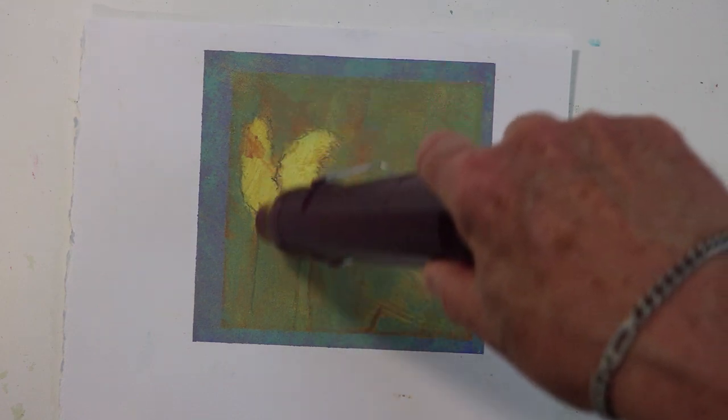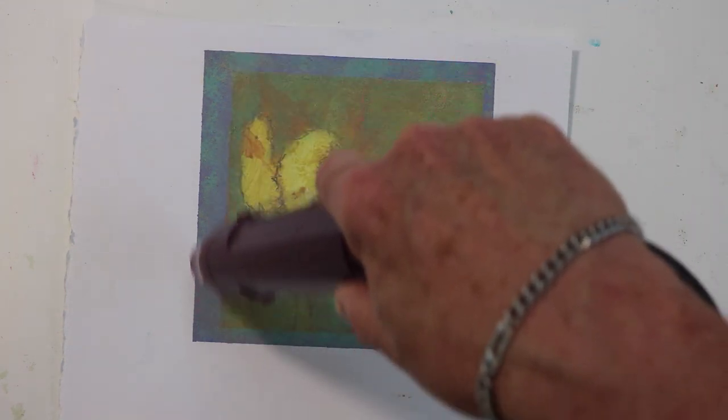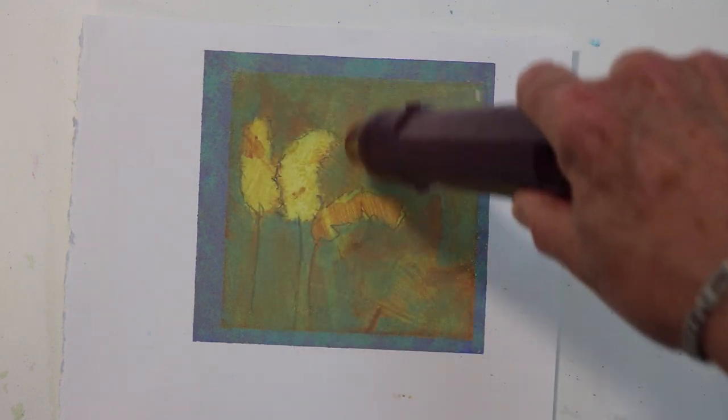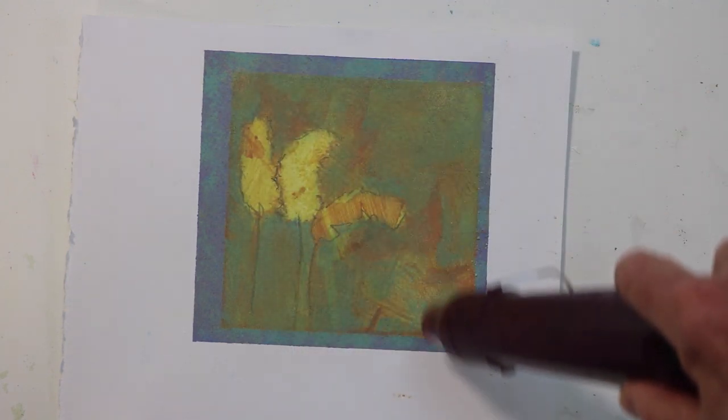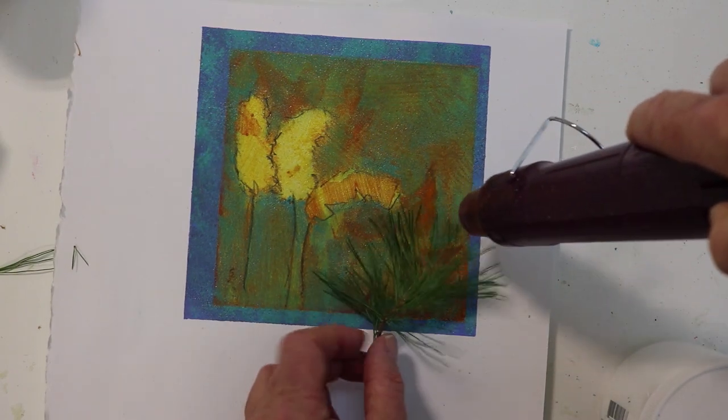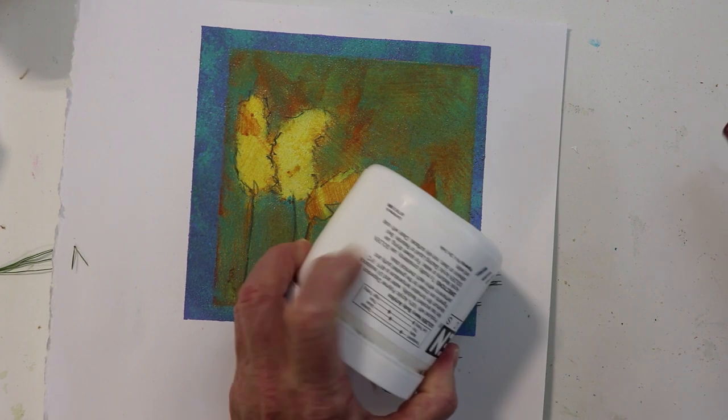Then I use a heat gun and I melt the embossing powder. I should really hold the heat gun in one spot, but I got a little impatient.